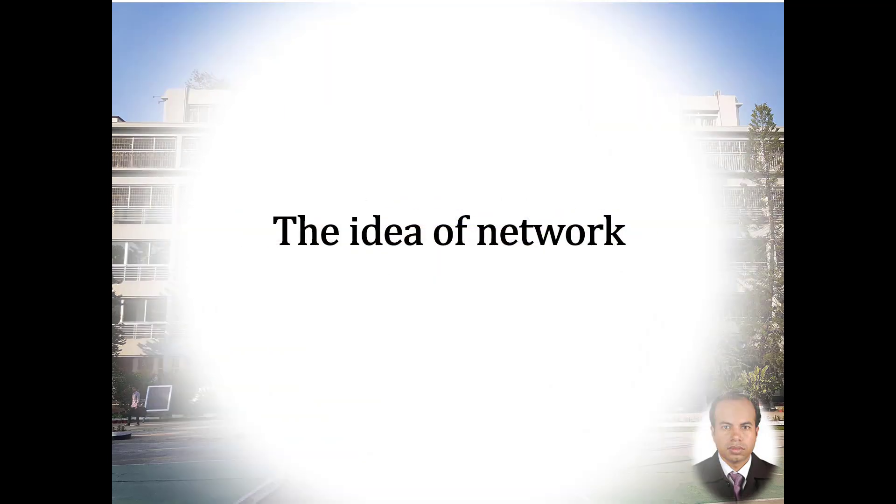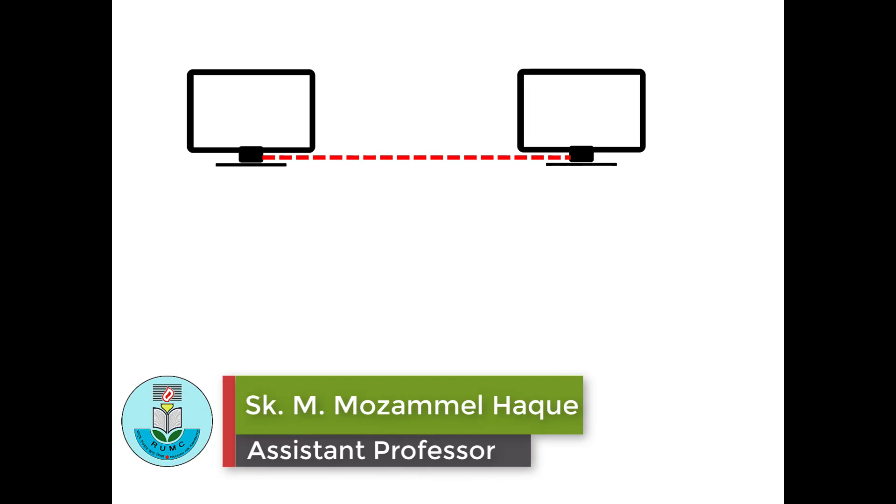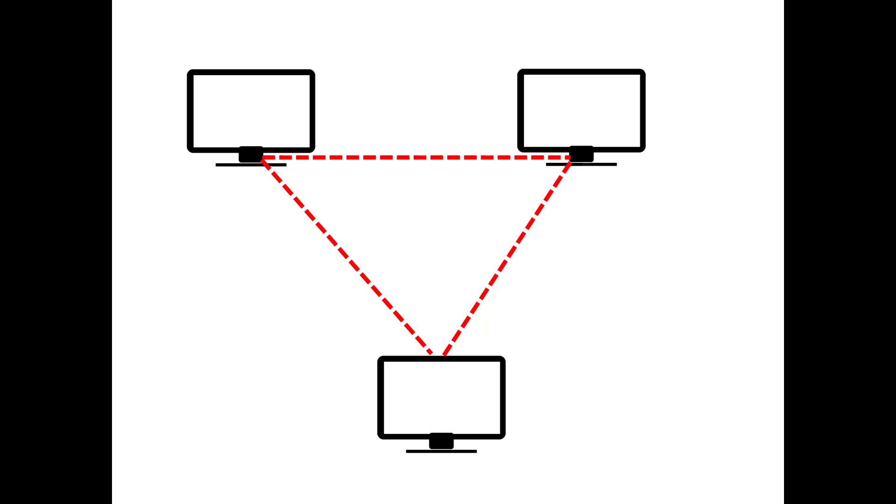At first, I'm going to explain the idea of network. Suppose there are two computers. They're connected by any medium and they're exchanging data — this is called a computer network. If we add another computer and make connections among them, it is also a computer network. In this way, we can form a bigger and bigger computer network by connecting many computers together.